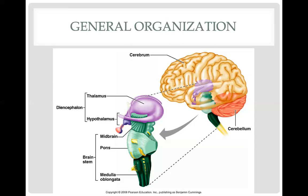The brain stem itself has three parts: right inferior to the diencephalon is your midbrain, the bulging part is the pons, and then that continues to become the medulla oblongata. If you continue along the medulla oblongata, it actually becomes your spinal cord, which is again a continuation of your central nervous system.